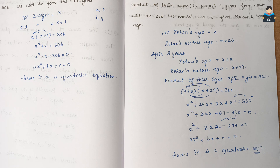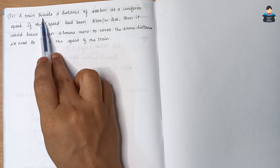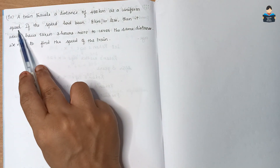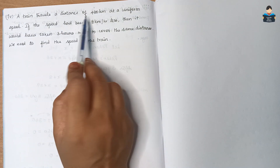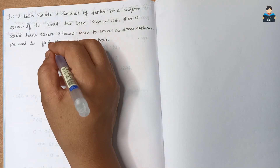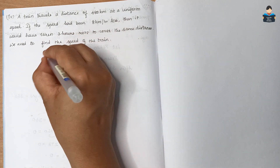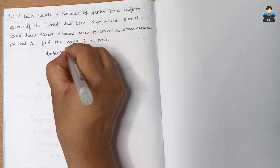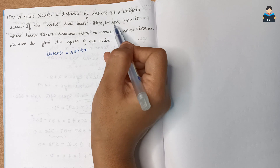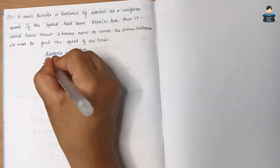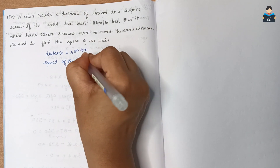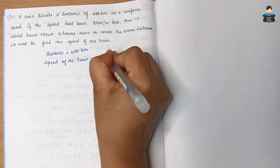The fourth subdivision: a train travels a distance of 480 km at a uniform speed. Let the speed of the train be x km per hour. Distance equals 480 km.